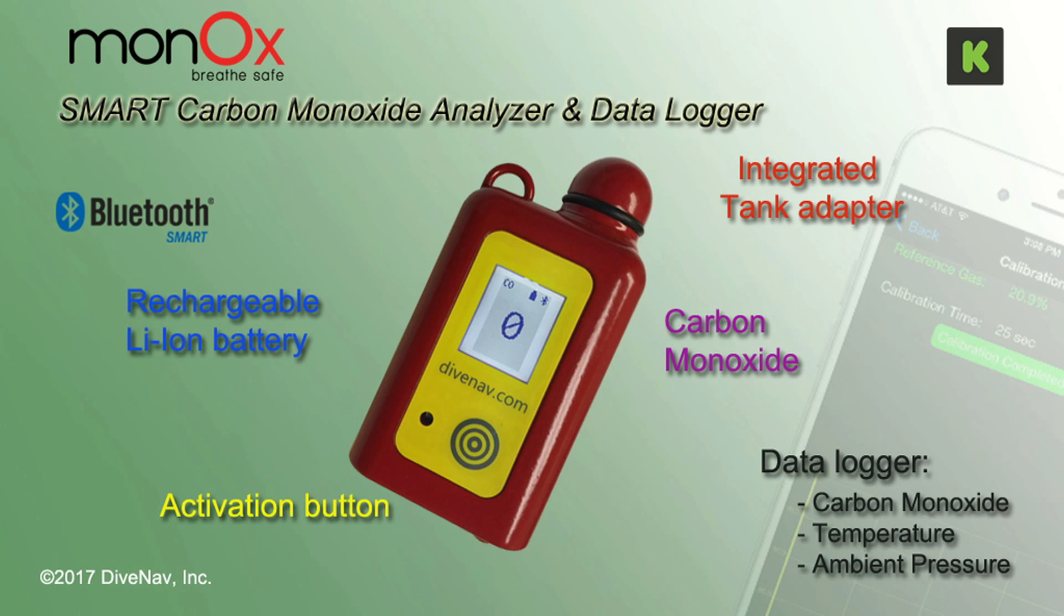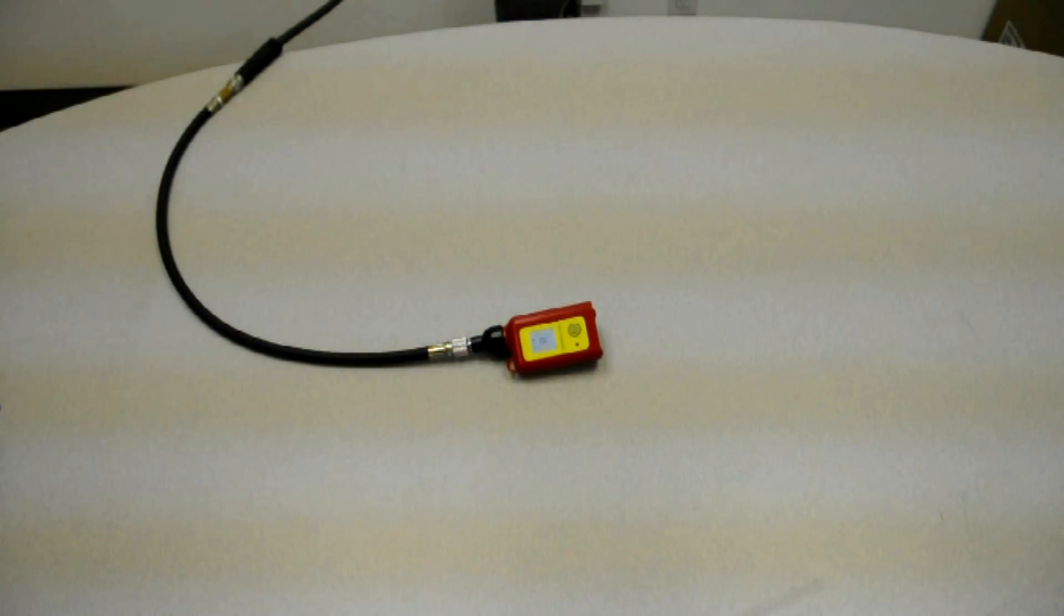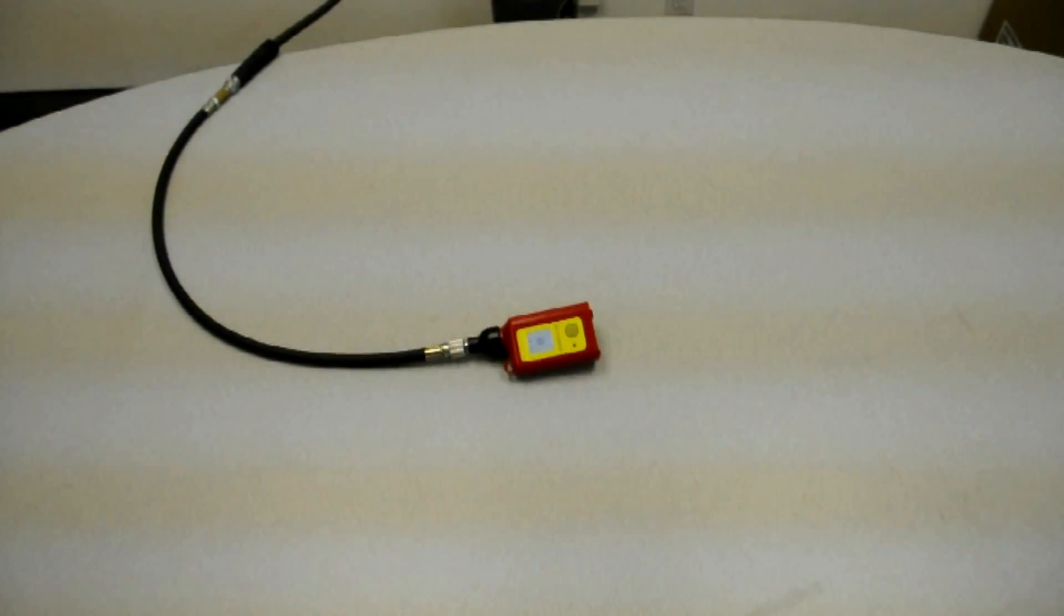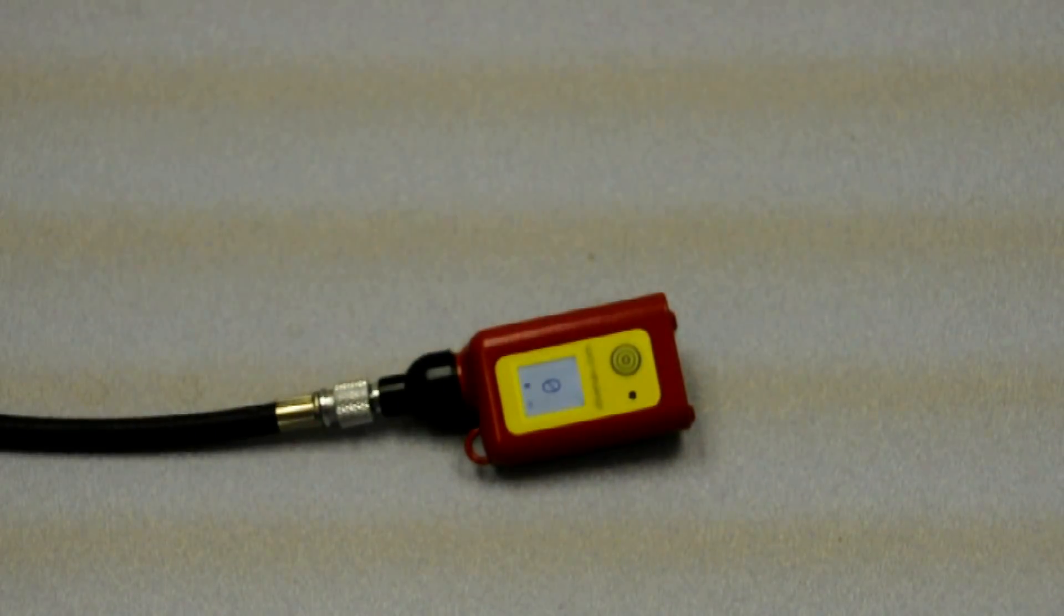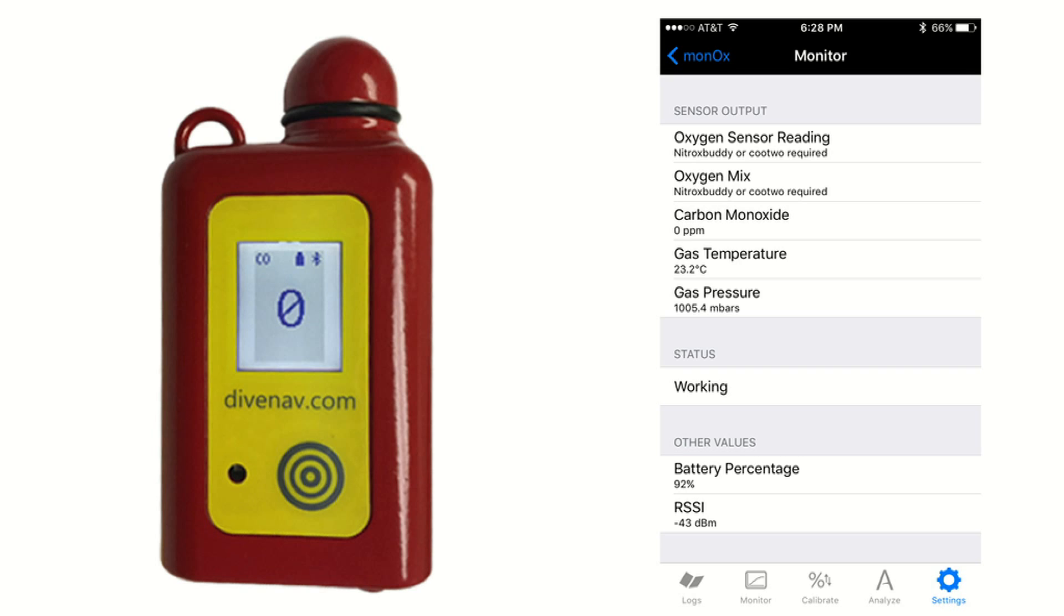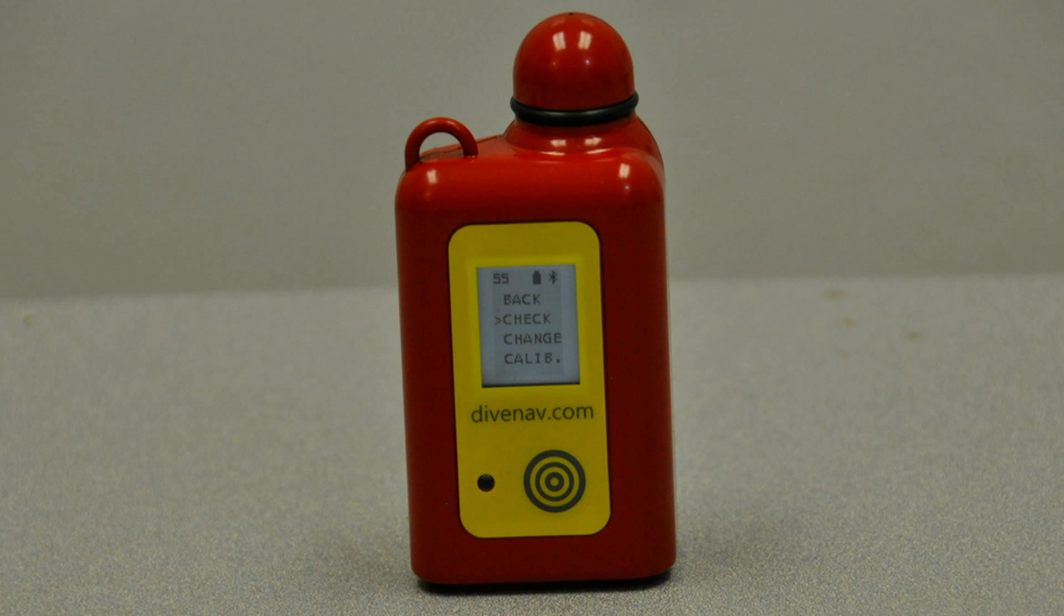MONOX is the world's first integrated smartphone-enhanced carbon monoxide analyzer and data logger specifically designed for scuba divers. MONOX is a gas analyzer that can be used to detect the presence of carbon monoxide in a breathing gas. It can be used with a smartphone or as a standalone device as it has its own display.